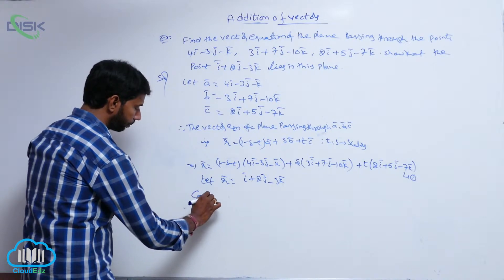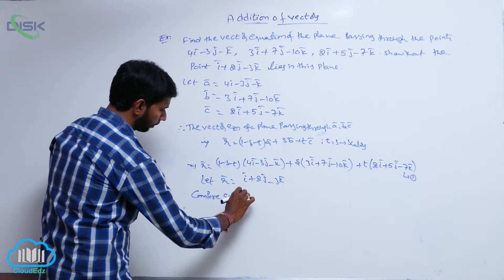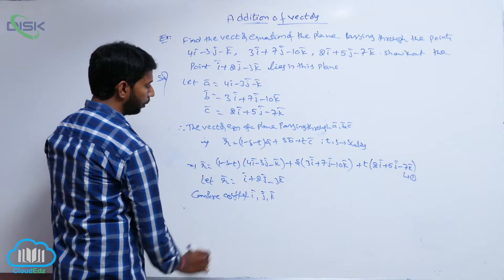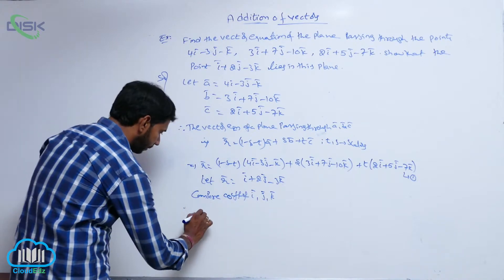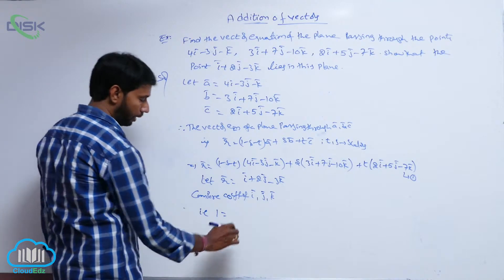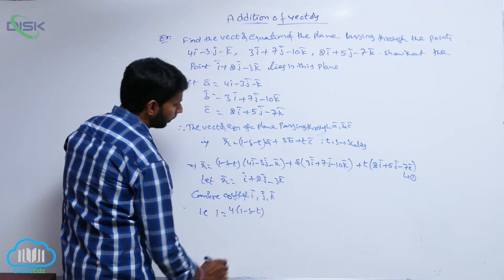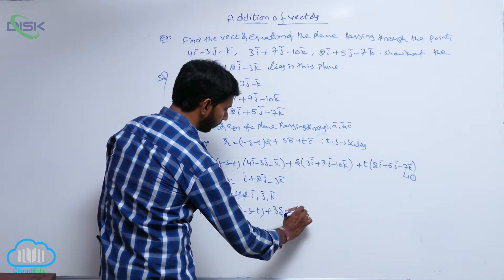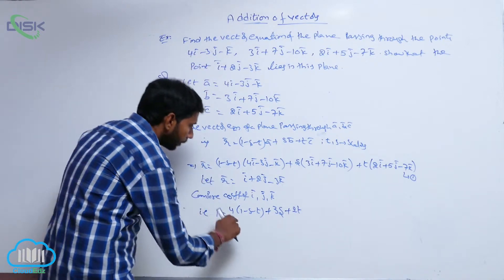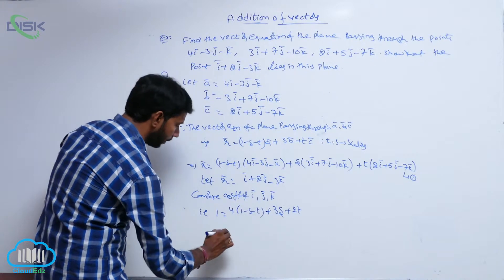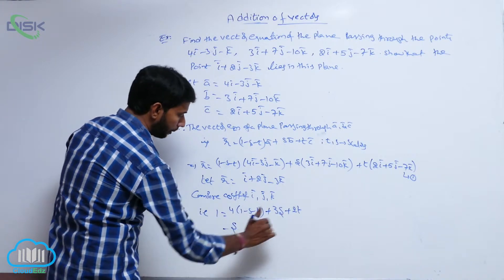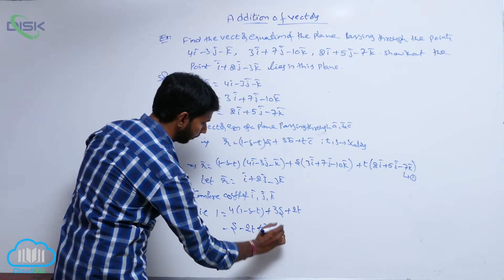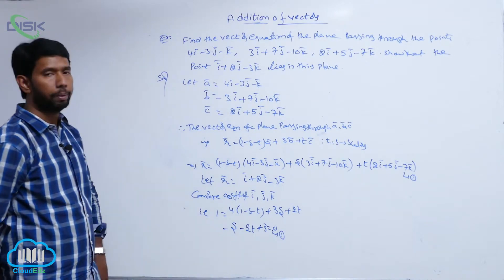Comparing coefficients of î, ĵ, k̂: the coefficient of î gives 1 = 4(1 - s - t) + 3s + 2t, which simplifies to 4 - 4s - 4t + 3s + 2t = 4 - s - 2t, giving -s - 2t + 3 = 0. This is equation 1.